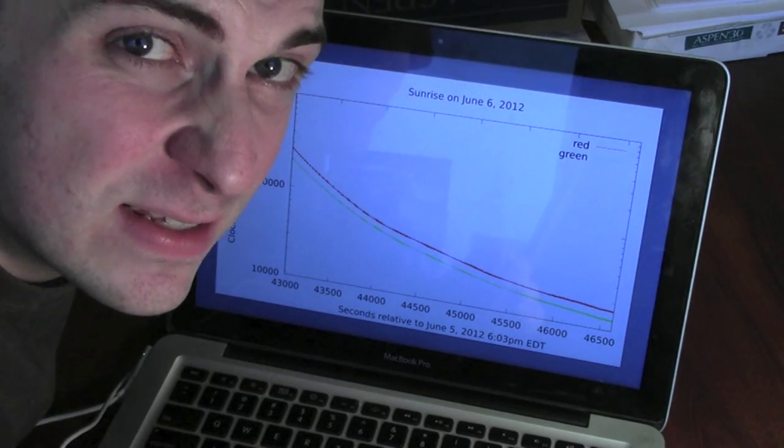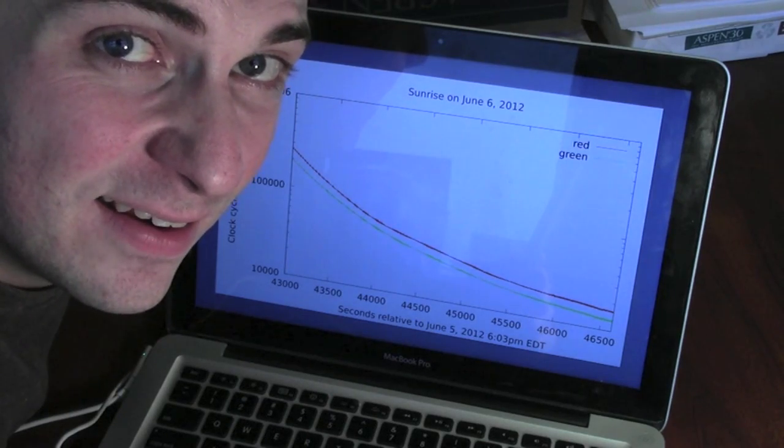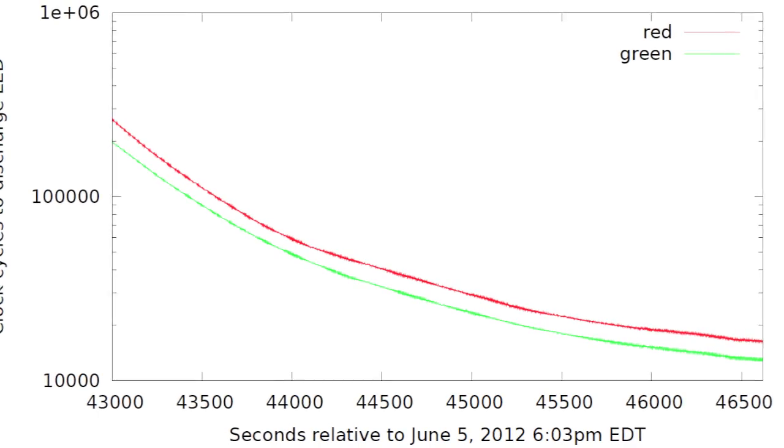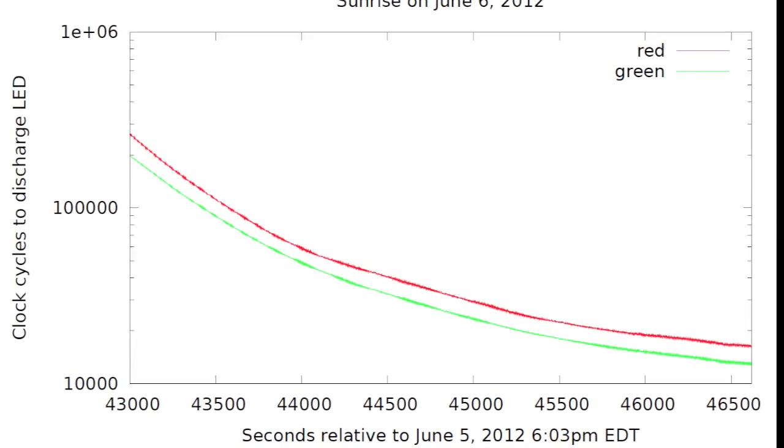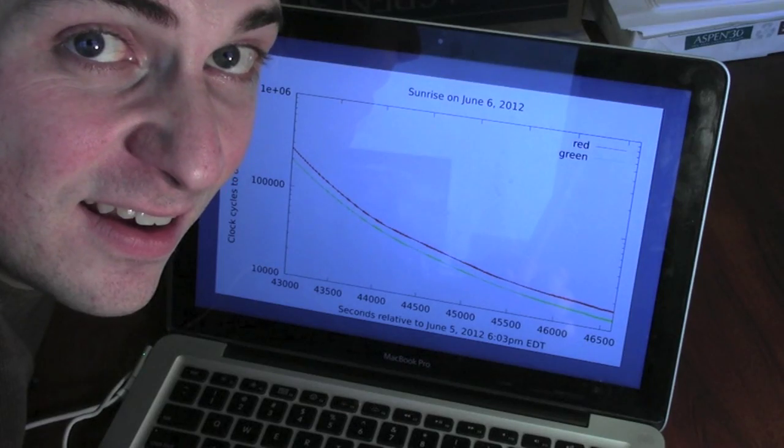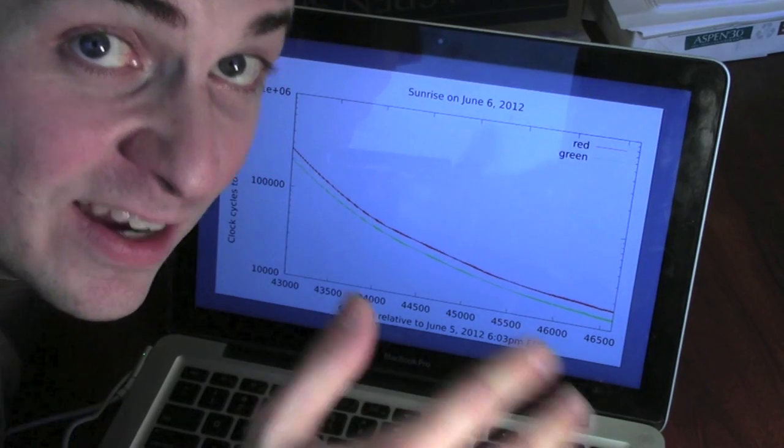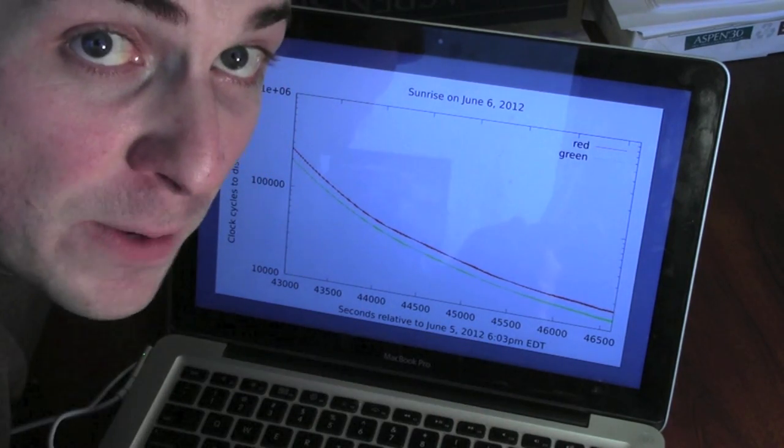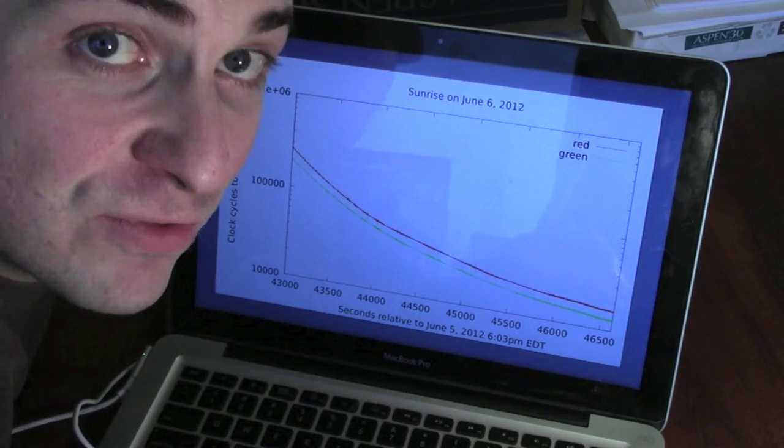Data that I gathered from the real world using the microcontroller. It's really two different functions: a function for the red LED and a function for the green LED. Along the x-axis, I've plotted a number of seconds that have elapsed since June 5, 2012 at 6:03 PM. And on the y-axis, I'm plotting the number of clock cycles it took to discharge the LED. So what does the red function do? Its input is a number of seconds that have elapsed since this particular moment in time. Its output is how many clock cycles it takes at that particular moment in time to discharge the red LED.